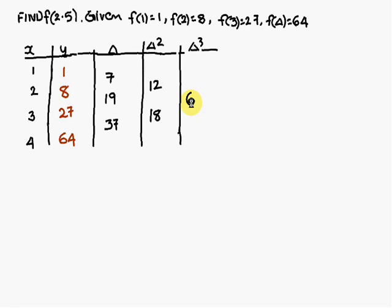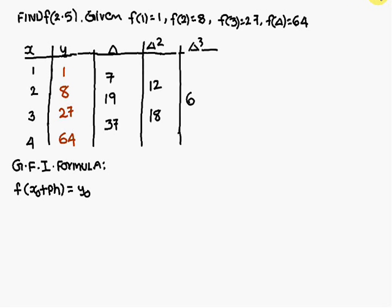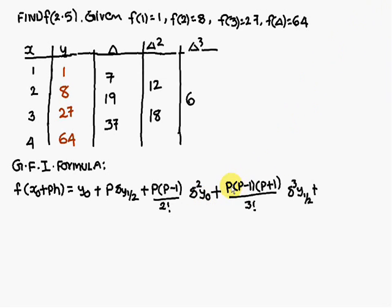This is the way to construct a difference table. Next you have to know the Gauss forward interpolation formula: f(x₀ + ph) = y₀ + p·Δy(1/2) + p(p−1)/2!·Δ²y₀ + p(p−1)(p+1)/3!·Δ³y(1/2), where p = (x − x₀)/h.